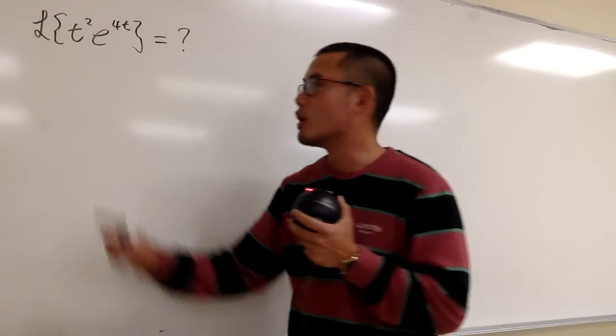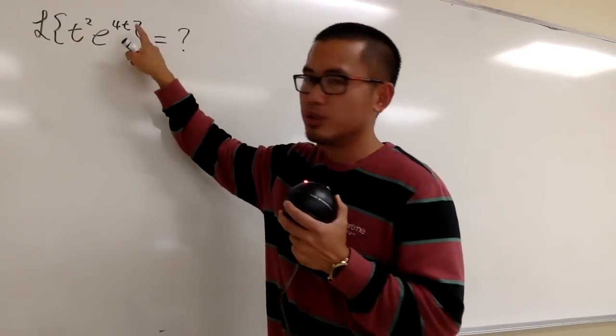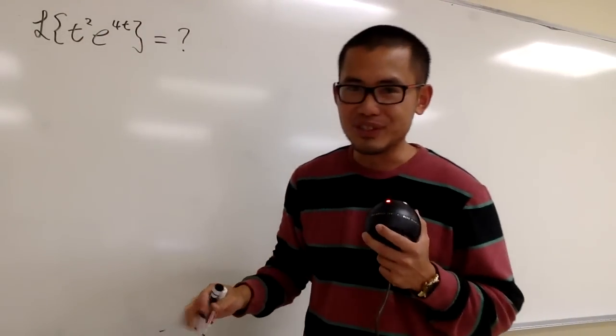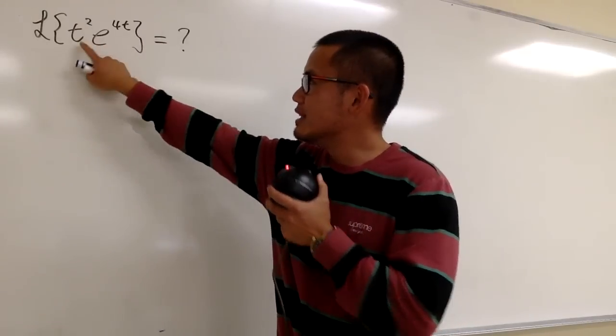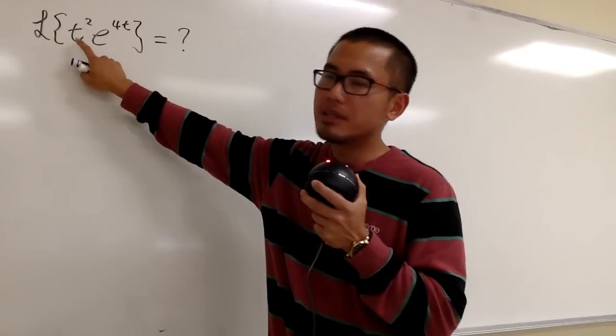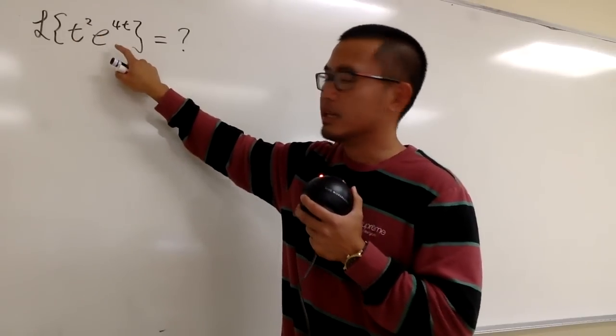All right, I'm going to show you guys how to work out the Laplace transform of the function t squared times e to the 4t, and we will not be using the definition because the integral part will be kind of crazy. Anyway, as we can see, we have a plot of two functions, namely t squared and the other one is e to the 4t.